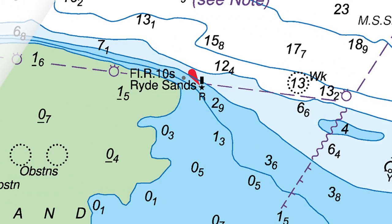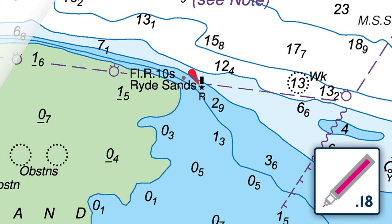Using a magenta 0.18 pen, draw a small circle on the marked spot. Then draw a neat arrow to link the existing position of the light beacon with the new position.